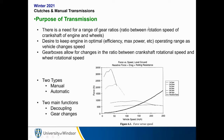So what's the purpose of a transmission? There is a need for a range of gear ratios — the ratio between the rotation speed of the crankshaft and the wheels. The desire is to keep the engine in its optimal operating range, whether that's for efficiency or max power, as the vehicle changes speed. Gearboxes allow for changes in the ratio between the crankshaft rotational speed and wheel rotational speed.